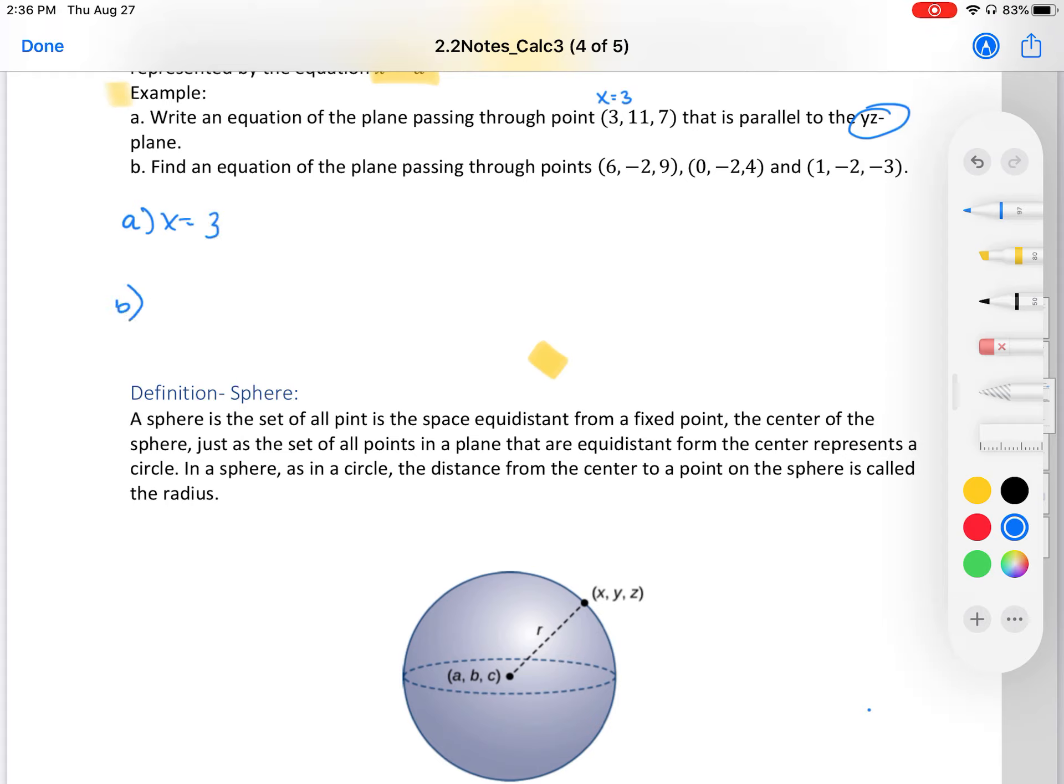Part b: Find the equation of the plane passing through the points (6, -2, 9), (0, -2, 4), and (1, -2, 3). Here we see this as a pattern, and we see that the plane that would work has that same point throughout. We have x, y, z, and y equals -2 throughout, so the equation is y = -2.